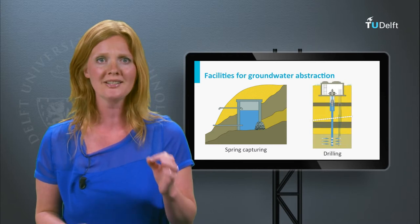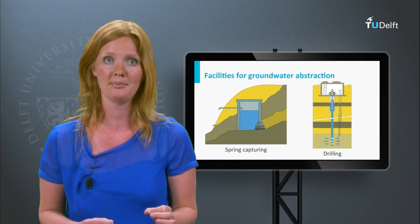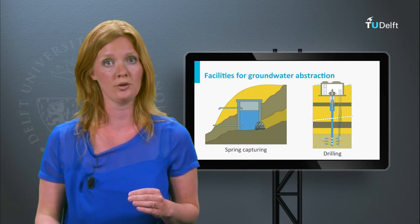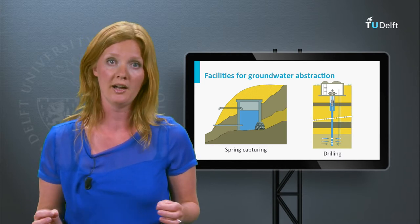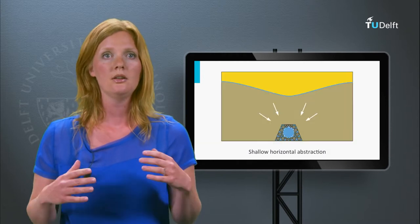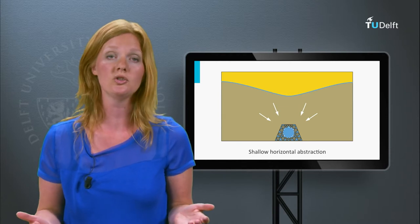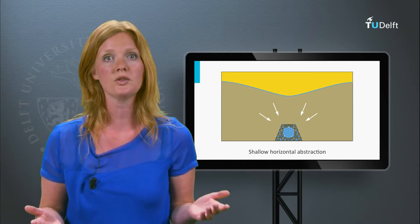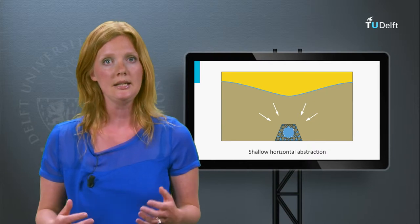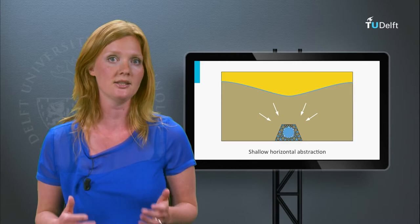Well types can be divided into horizontal and vertical wells, and both can be applied for shallow and deep groundwater. Shallow horizontal abstraction is very attractive in areas like the Dutch dunes, where fresh water floats on top of the underlying salt water. Deep horizontal wells were found in Persia in ancient times, but still exist today.